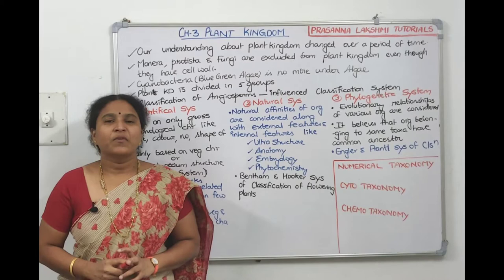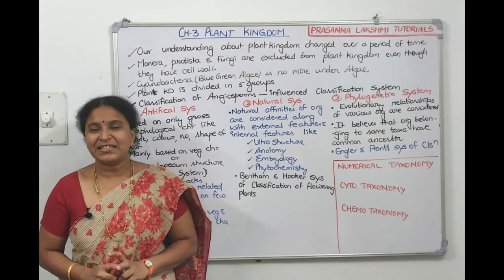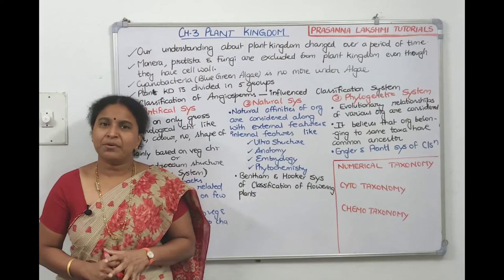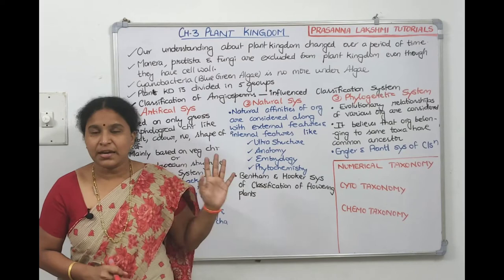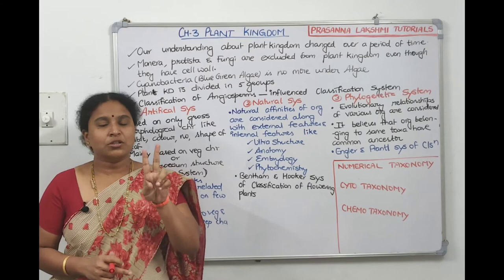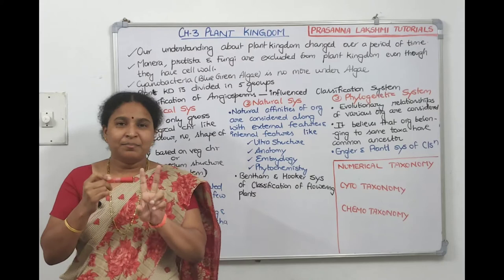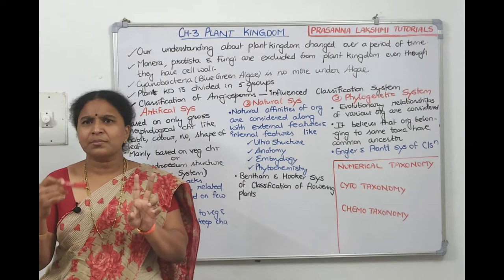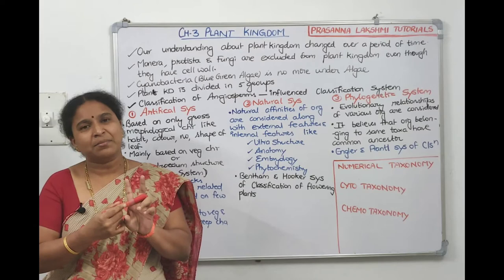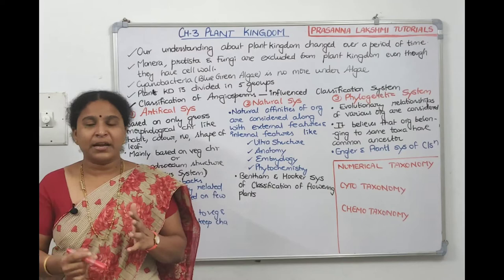Welcome everyone. We're going to start a new chapter today — Plant Kingdom, which is Chapter 3 in 11th NCERT. Plant Kingdom and Animal Kingdom are basic botany and zoology chapters. In two-kingdom classification, organisms with cell walls are kept in the plant kingdom, and those without cell walls are kept under the animal kingdom.